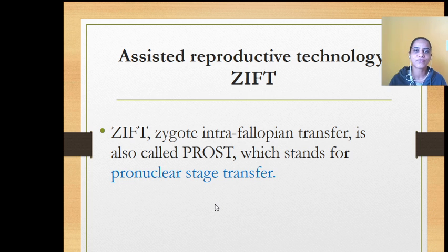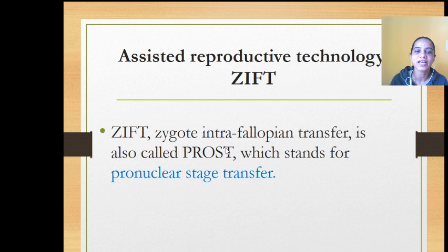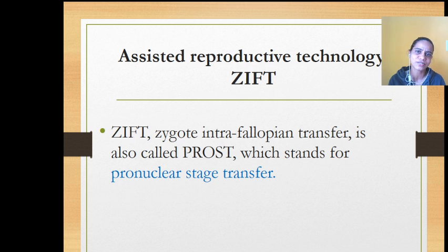Next is ZIFT, which is similar to GIFT but the key difference is that in GIFT gametes are transferred, whereas in ZIFT a zygote is transferred. ZIFT stands for Zygote Intra-Fallopian Transfer. It is also called PROST — Pronuclear Stage Transfer — because during fertilization, just after zygote formation, the male and female nuclei are still present as pronuclei. Since the zygote is transferred at this pronuclear stage, the procedure is also known as PROST. It is additionally called TET — Tubal Embryo Transfer — since the fertilized egg is transferred to the fallopian tube.